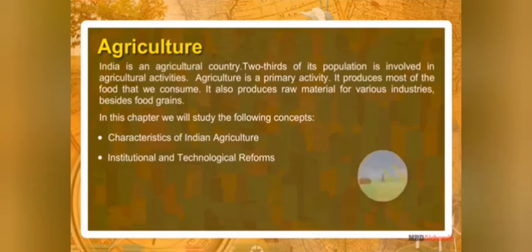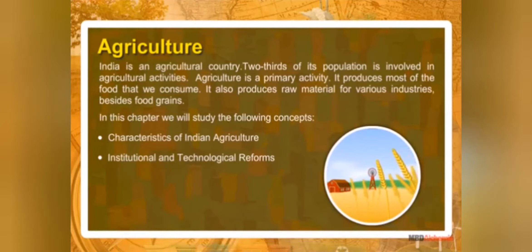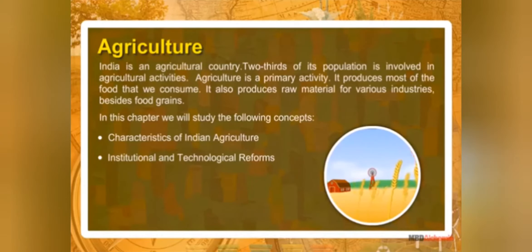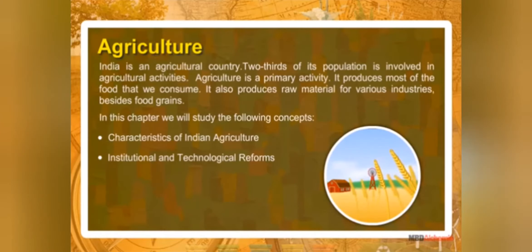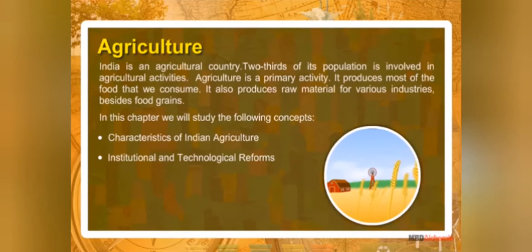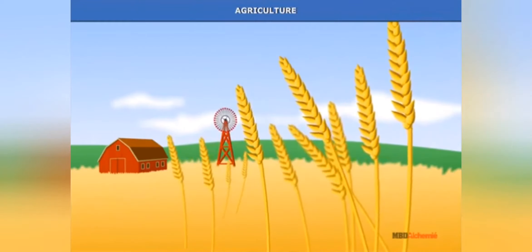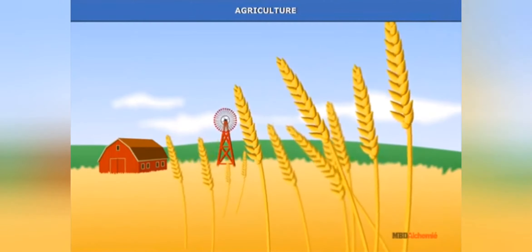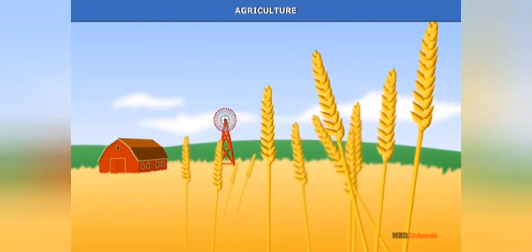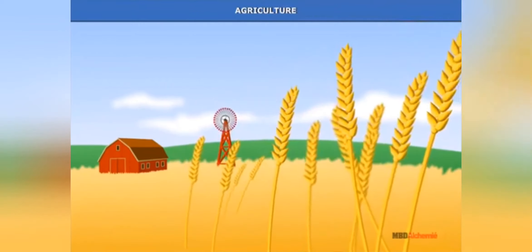Welcome students. India is a very good agricultural country — two-thirds of the population is involved in agricultural activities. Agriculture is a primary activity; it produces most of the food that we consume and also raw materials for various industries. Agriculture is the primary activity because food is essential for everyone, which is why so many people are involved in the agricultural field.